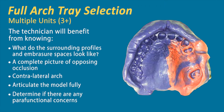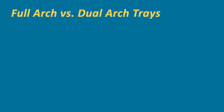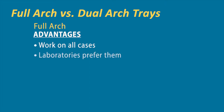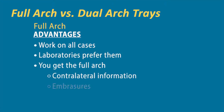Any laboratory will tell you that a full arch impression is what they'd recommend. But we understand that in today's day and age, the dual arch—because it's more cost-effective and a little less traumatic to the patient—is very common and can be used as long as it's used in proper situations and managed well. Comparing the two: full arch advantages are that it works on all cases; laboratories prefer it because we have the full arch, contralateral information, embrasures, articulation—everything. Dual arch advantages: one-step saves time, it's quicker for doctors, and you obtain the impression in the occlusion.